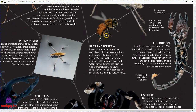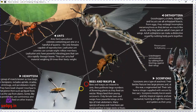Bees and wasps are related to ants. Bees pollinate large numbers of flowering plants as they feed on nectar. Wasps feed their young on insects. Only female bees and wasps have a powerful sting at the tips of their abdomens. Many species of wasps and most bees are social and live in large nests or hives.